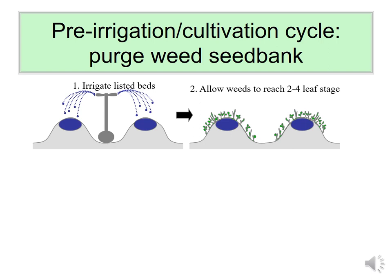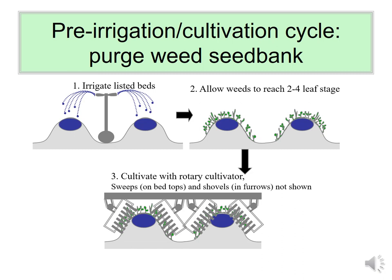Seeds capable of germinating will do so usually from within the top quarter-inch; very few can germinate from below 2 inches. Once those surface weed seeds germinate, use a secondary tillage operation — sweeps, shovels, or a rotary cultivator — to chop up and dislodge those seedlings. Let them dry so they die, then repeat the cycle as many times as you can afford. Three times is suggested here, but do it ten times if possible; some farmers can only afford once per season.